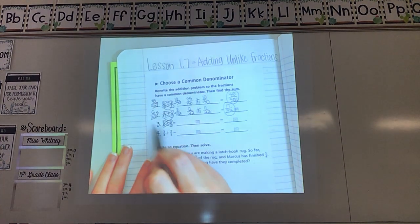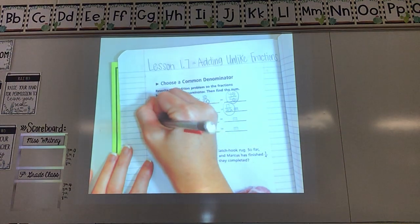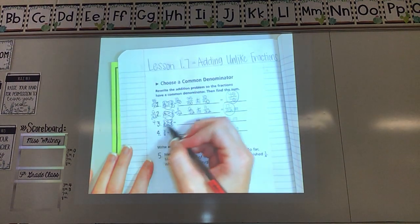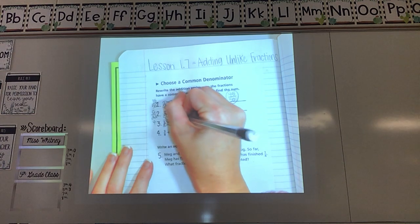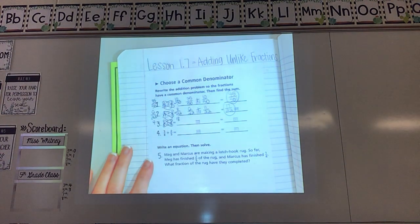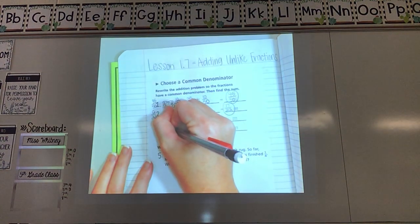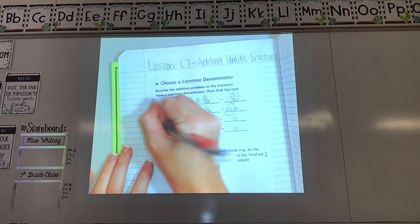Starting at the bottom going up, 1 times 4 is 4. 6 times 3 is 18. What's my next step after I've cross multiplied? Hopefully you said multiply the bottom numbers.